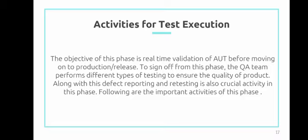There are some activities for test execution. The object of this phase is real-time validation of the AUT before moving on to the production release. To sign off from this phase, the QA team performed different types of testing to ensure the quality of the product, along with defect reporting and retesting, which are also crucial activities in this phase.